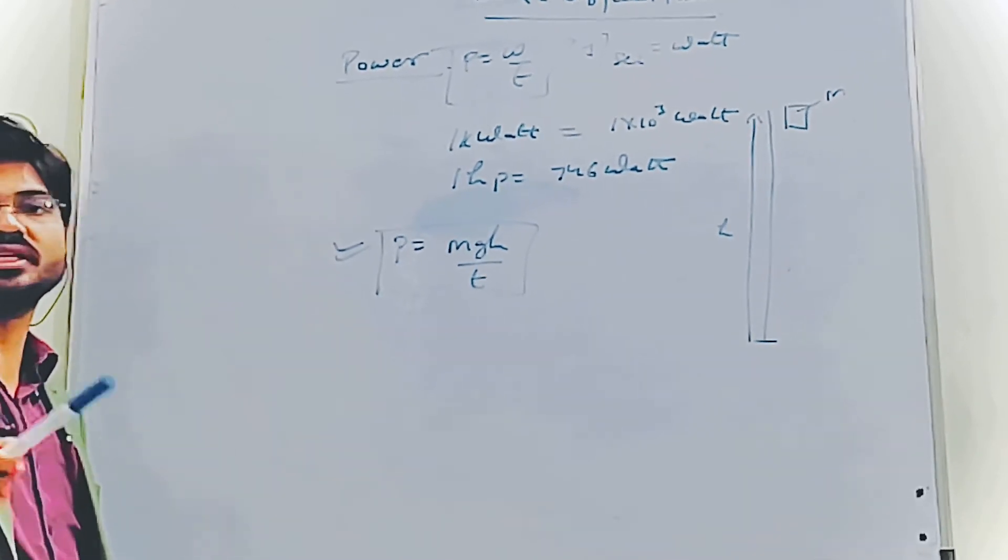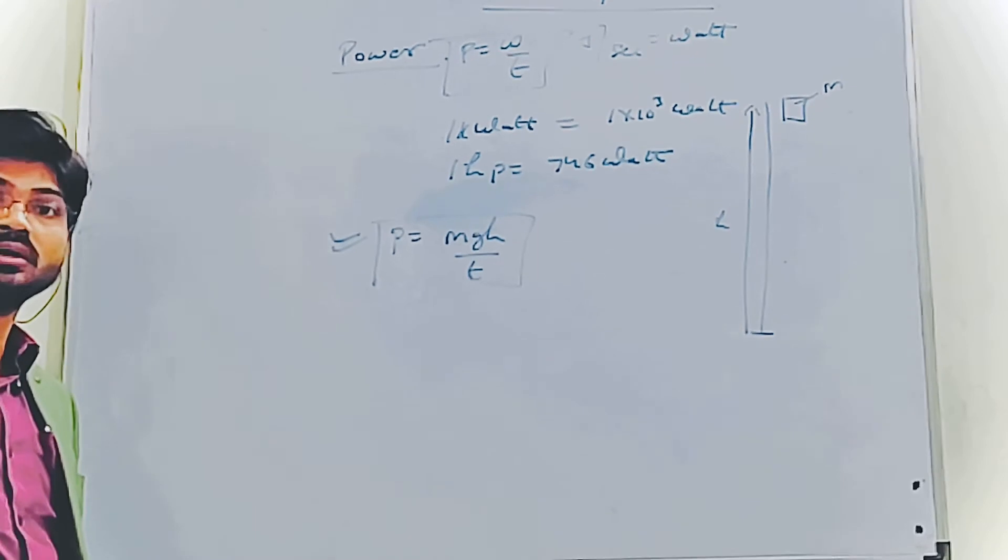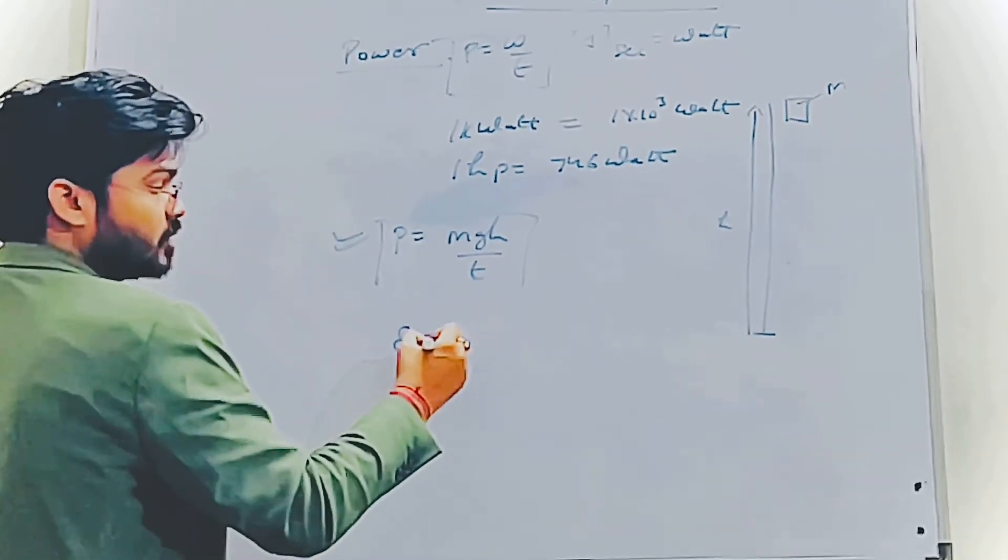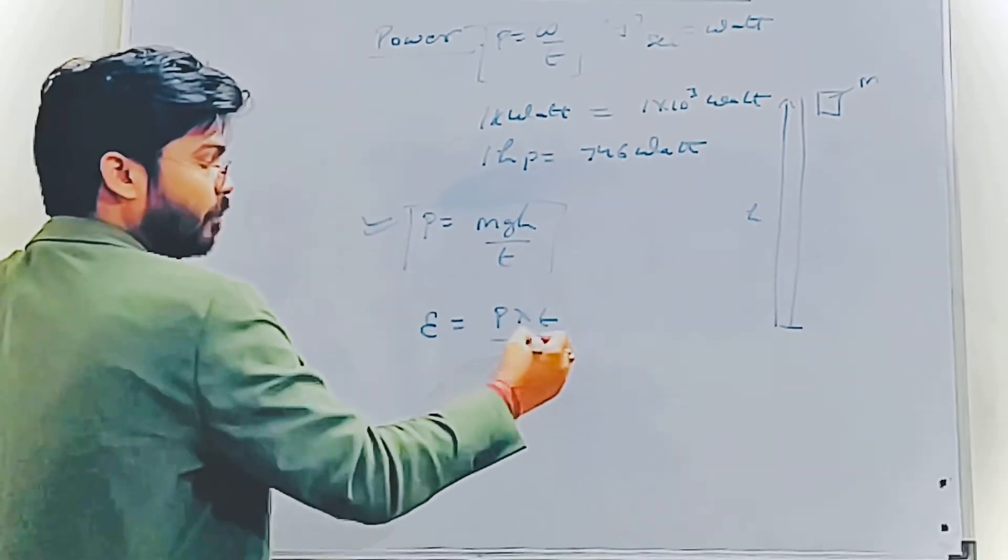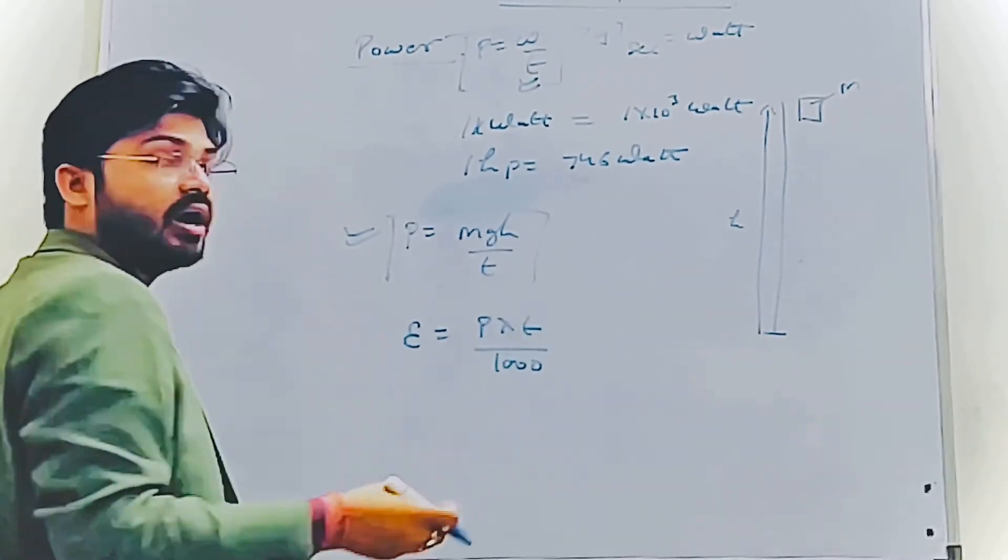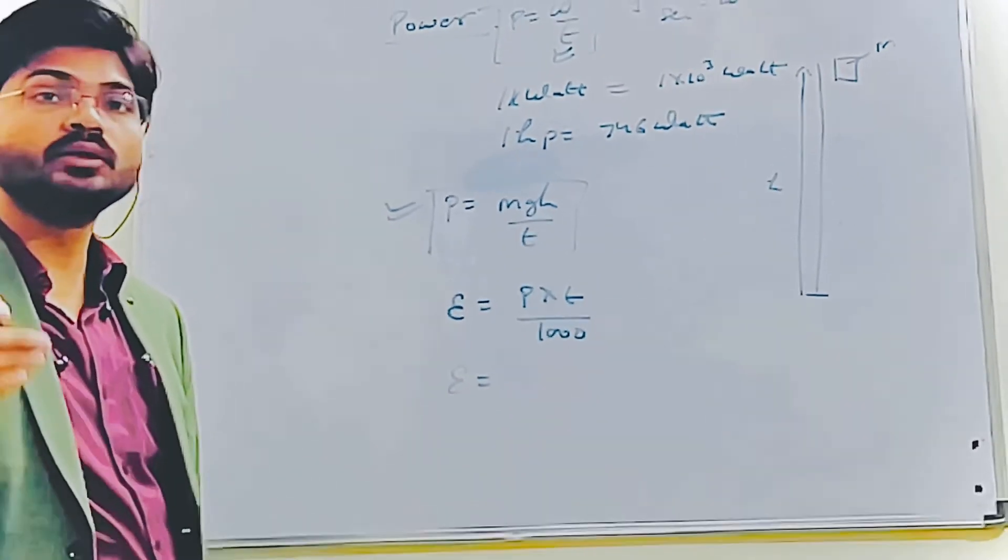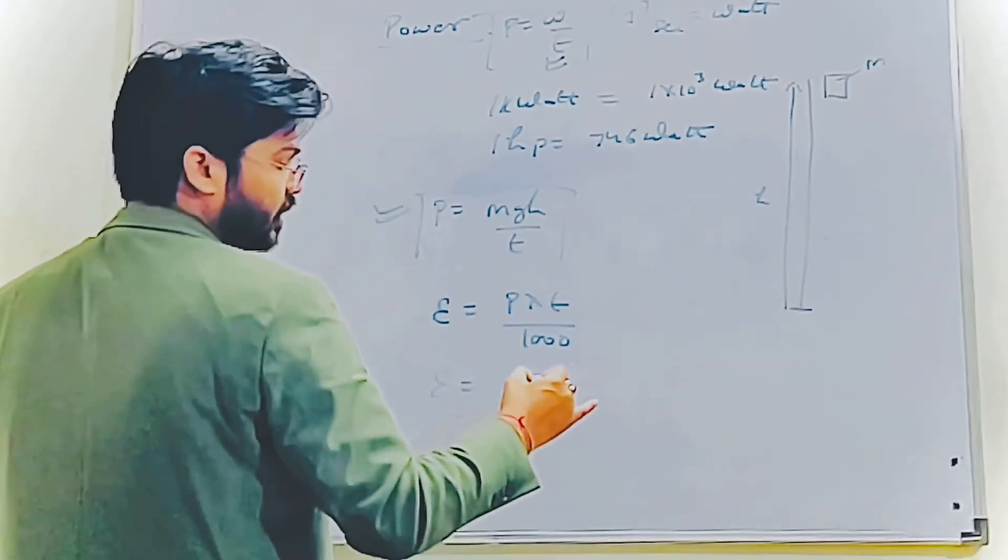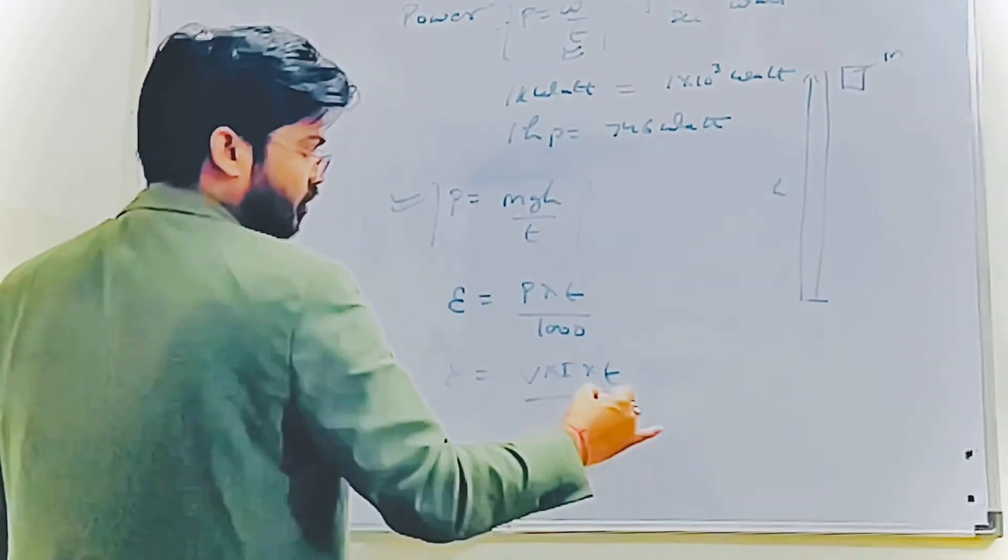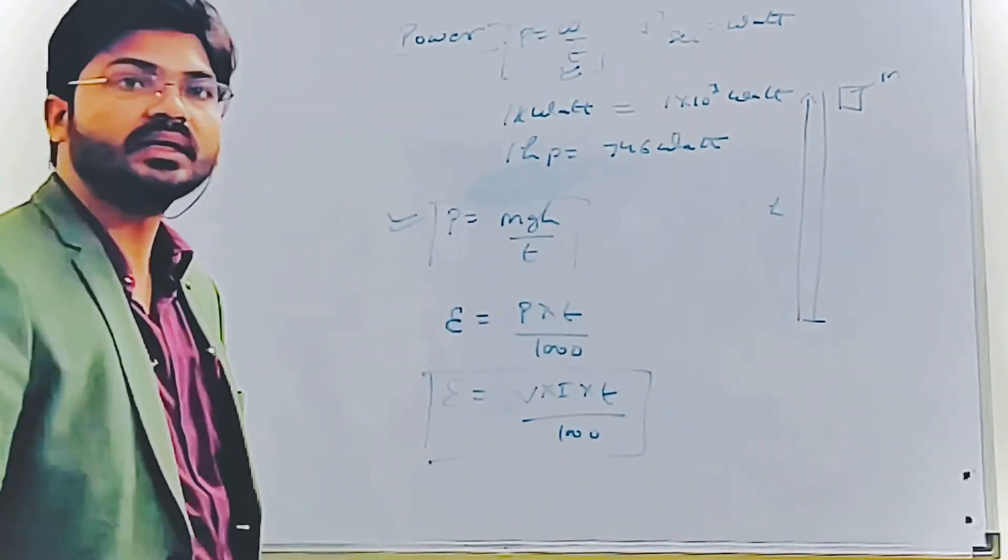What is the commercial unit of electricity? It's kilowatt-hour, kWh. The formula is: kilowatt-hour equals P times t upon 1000. Here t is in seconds, but for kilowatt-hour, t is in hours. P equals V into I into t. Remember that. Kilowatt-hour equals P times t upon 1000. V is the potential difference, I is the current value.